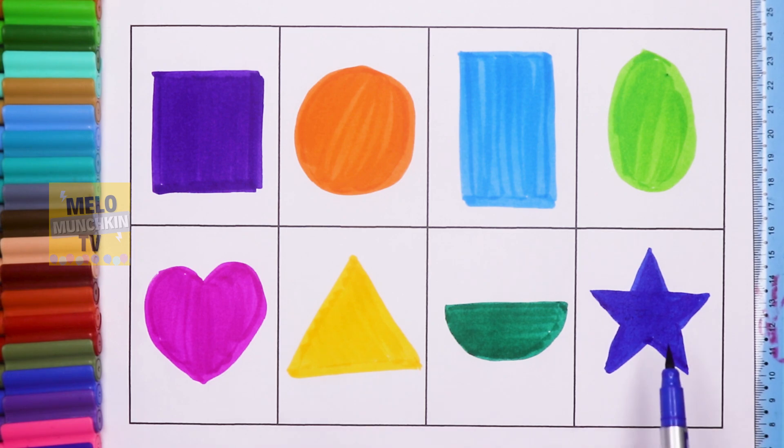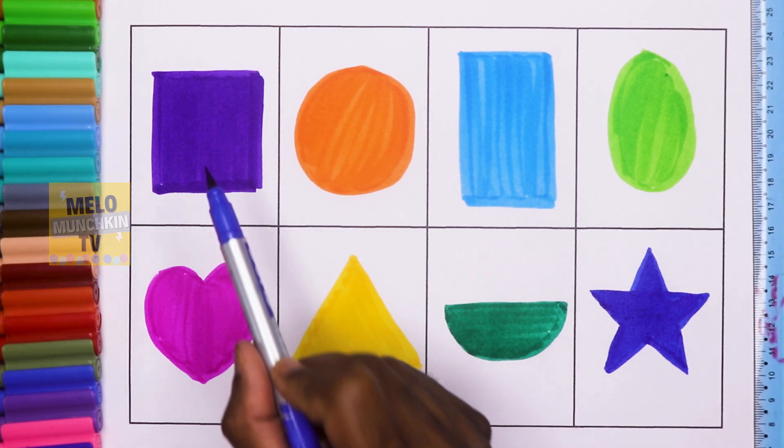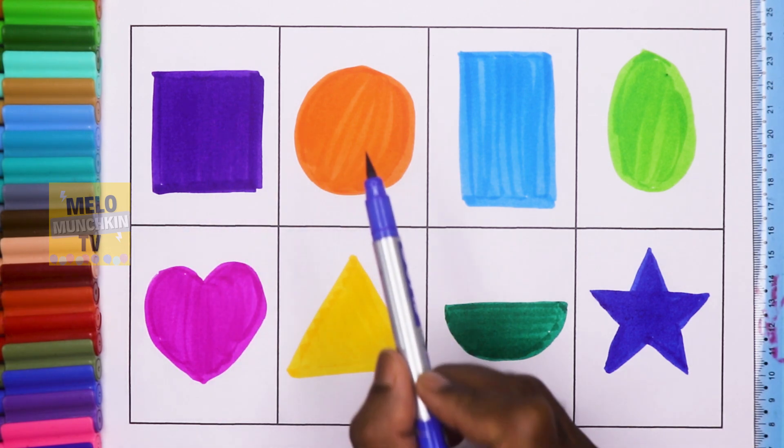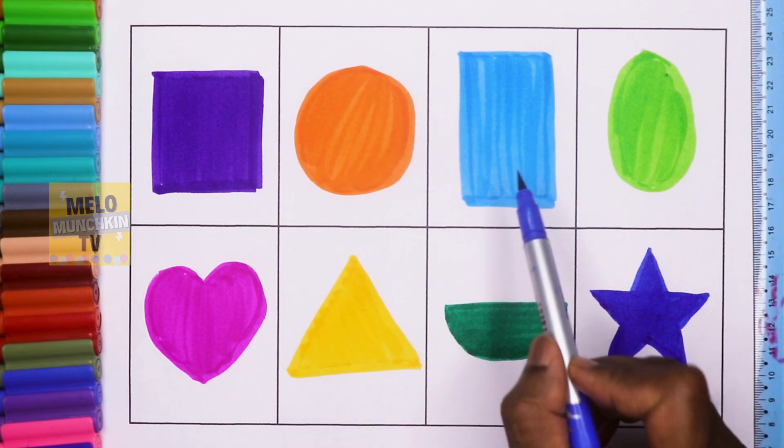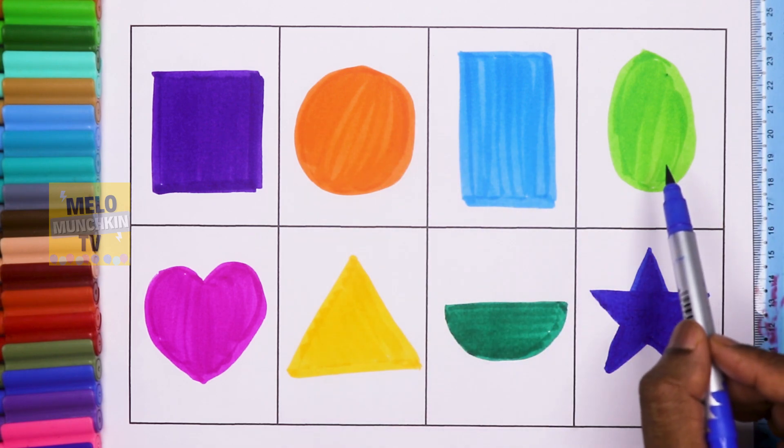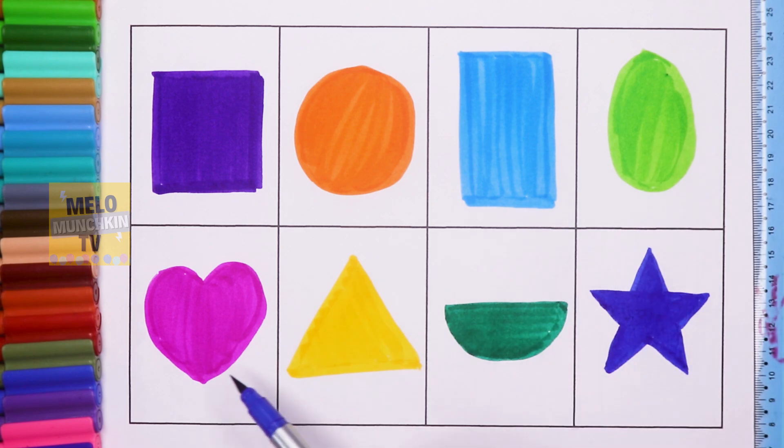So this is star. We have eight shapes. What are they? Let's see. This is purple square, this is orange circle, this one is blue rectangle, this one is green oval, this one is pink heart.